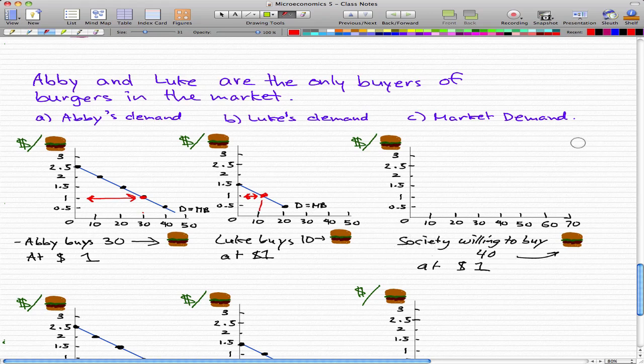This is because at a dollar per burger, Abby will buy 30 burgers, or at most 30 burgers for a dollar, and Luke will buy 10 burgers. So really, 30 plus 10 is 40 burgers.